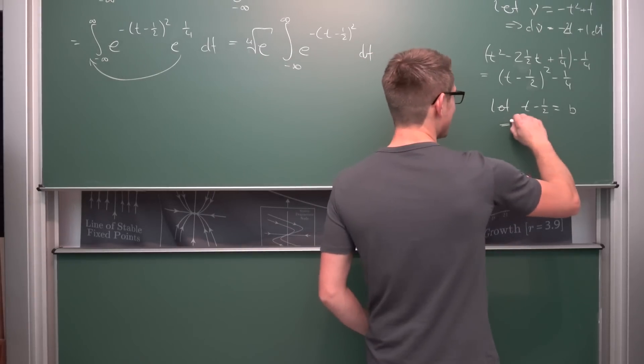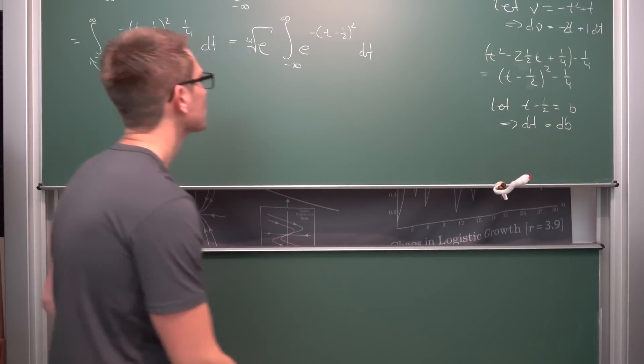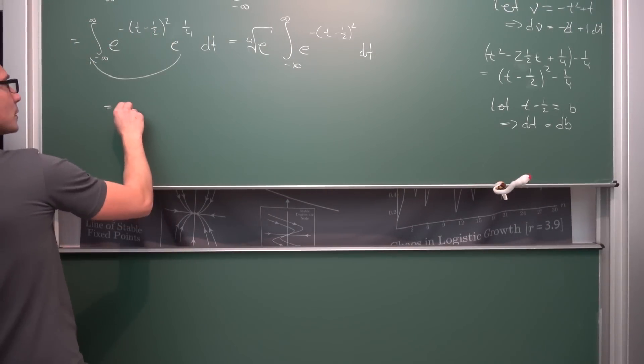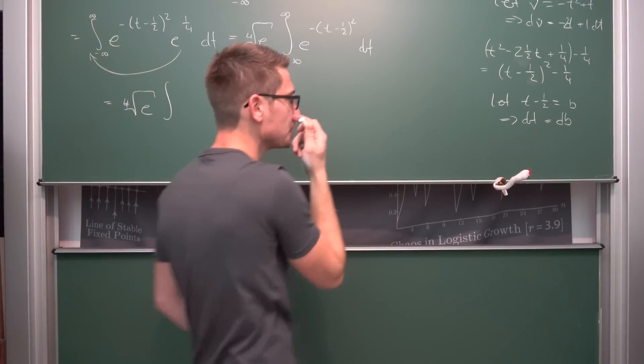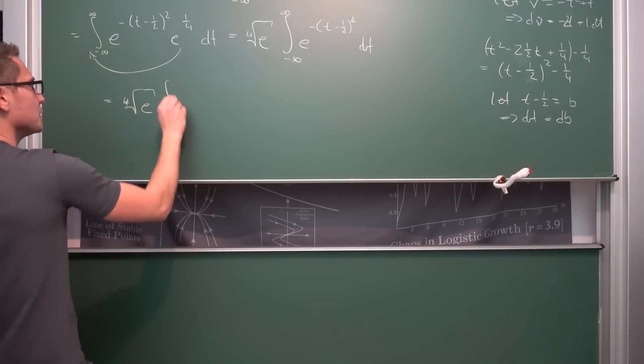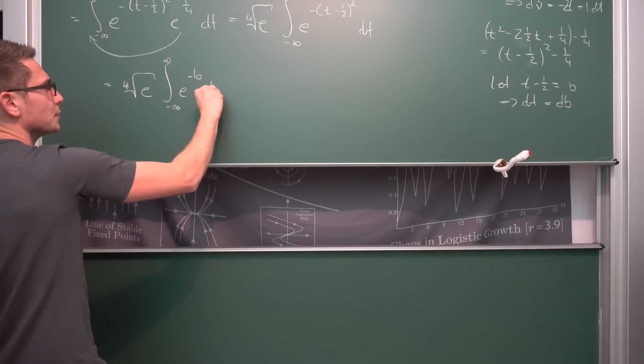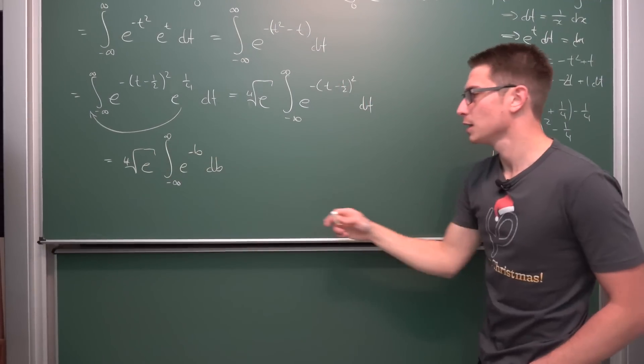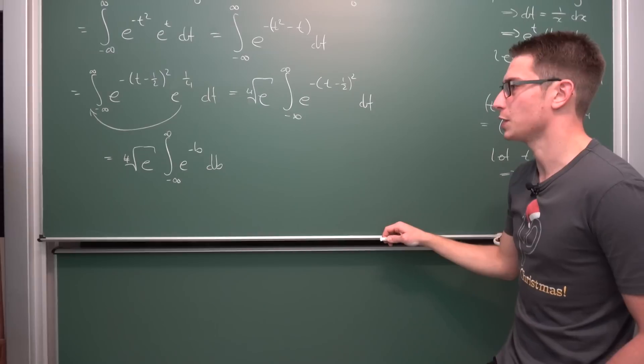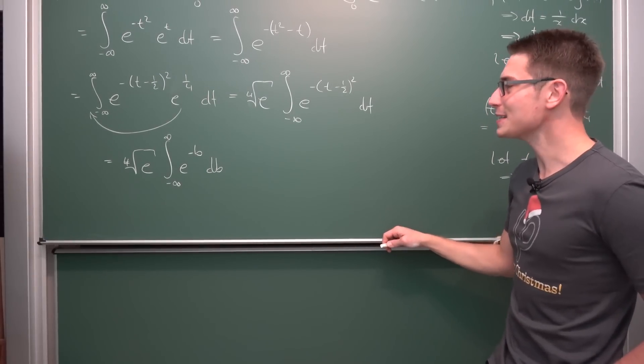If we differentiate this, we get that dt is obviously simply db. Meaning we get the fourth root of e times the integral - upper and lower bounds won't change in the limit - so negative infinity to infinity, e to the negative b squared db. And yeah, this right here is the Gaussian integral.